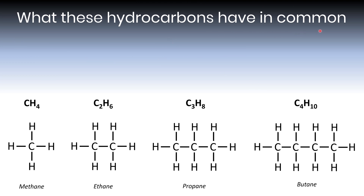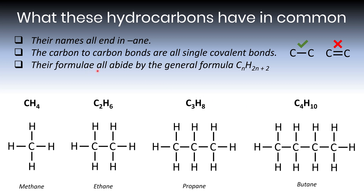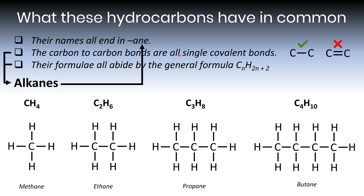Let's now consider what each of the hydrocarbons we've just drawn have in common. You'll notice methane, ethane, propane and butane — their names all end in 'ane'. You may have also noticed that the carbon-to-carbon bonds, where they exist in ethane, propane and butane, are all single covalent bonds — not double covalent bonds. Their formulae also all abide by a general formula of CnH2n+2. These two features — all single C-C bonds and the CnH2n+2 general formula — make them a class of hydrocarbon called alkanes, and that's why their names all end in 'ane'.